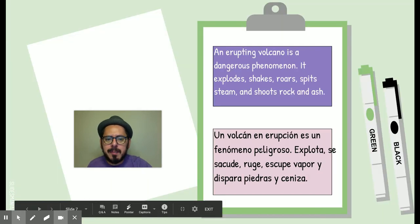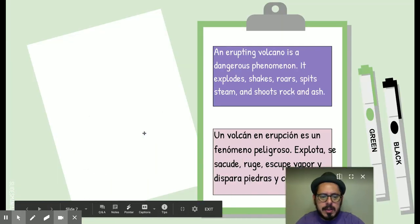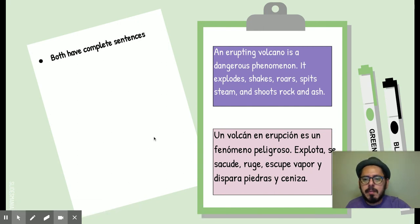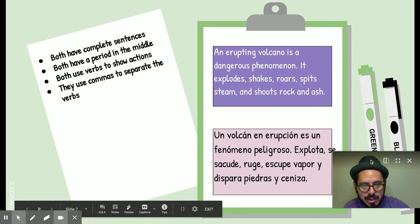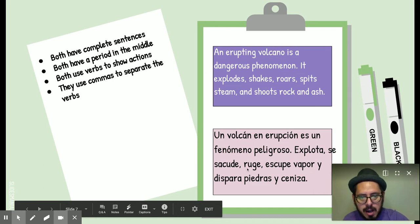Vamos a verlo en lista. So, both have complete sentences. Both have a period in the middle because we have complete sentences in both cases. Both use verbs to show actions, and that's the most important thing. Both Spanish and English use verbs to show actions. They use commas to separate the verbs. Just in Spanish as in English, the same thing. Everything that's done is separated by a comma except for the last one in Spanish.